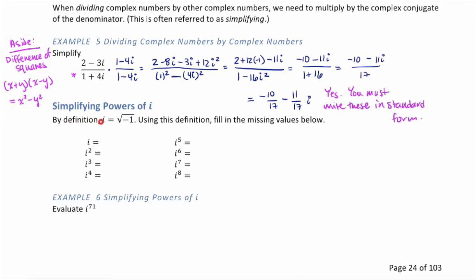Simplifying powers of i. By definition, i equals the square root of negative 1. We know i squared equals negative 1. For i cubed, we rewrite it as i times i squared, which equals i times negative 1, giving negative i. For i to the fourth, we write it as i squared times i squared, which equals negative 1 times negative 1, giving positive 1. Please pause the video and fill in the rest of the pattern.